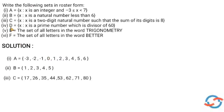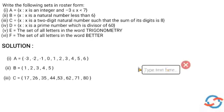Next question: D is equal to the set of all x such that x is a prime number which is a divisor of 60. So we first list the divisors of 60.